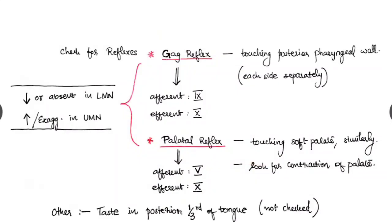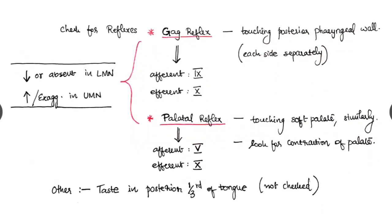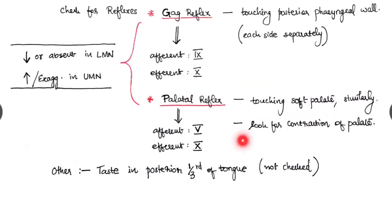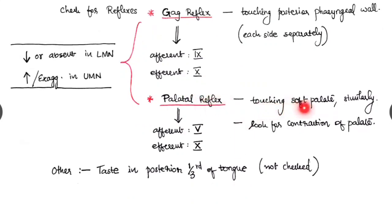Next is checking the reflexes, gag reflex and palatal reflexes. Gag reflex we check by touching the posterior pharyngeal wall each side separately. The afferent pathway is 9 and efferent is 10. Palatal reflex touching the soft palate similarly, and look for the contraction of the palate. Here the afferent is the trigeminal nerve and efferent is vagus nerve. This reflex is absent or reduced in LMN palsy and it is exaggerated in UMN palsy. Other tests, the taste in the posterior one-third of the tongue, but it is not checked nowadays.